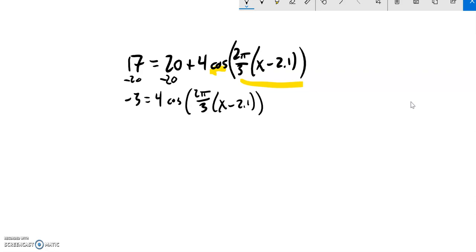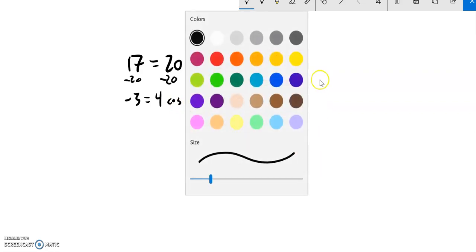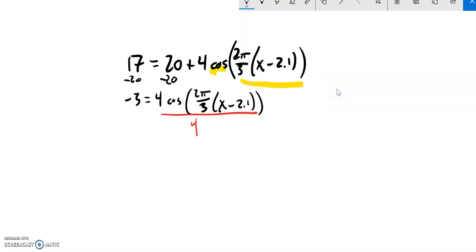Now this is 4 times cosine right here, so what I'm going to do then is divide by 4, divide both sides by 4 and notice then I end up with negative 3/4 equals cosine of all this stuff.